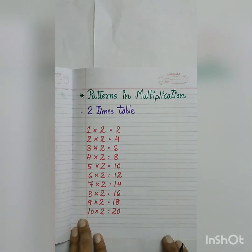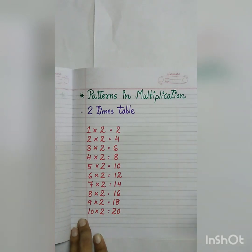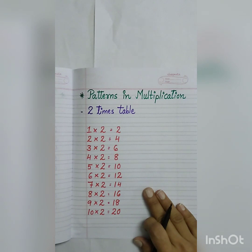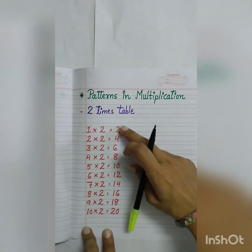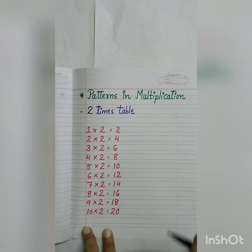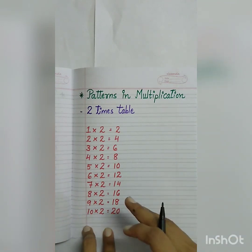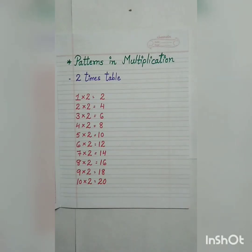As multiplication is also known as repeated addition — we have already covered that in the first session. Now, I have written the table of two. Can you tell me what pattern you can see in this table? The one pattern we can see is that the product increases by two every time. Every time it increases by two. This is a common pattern we can see in each and every table.